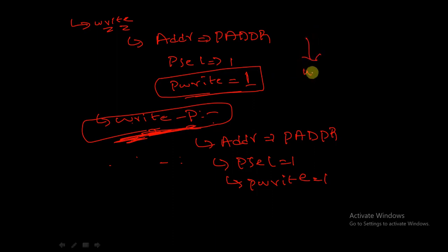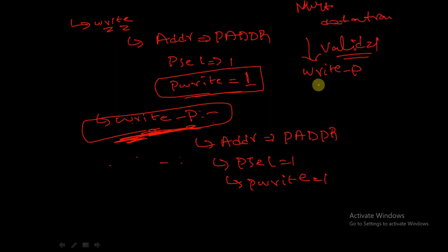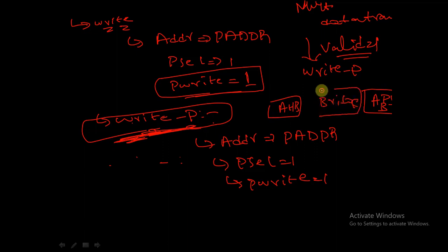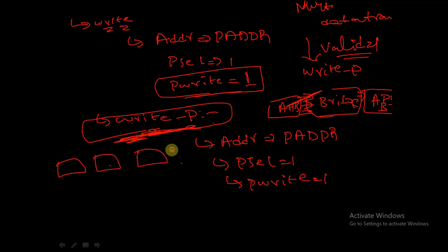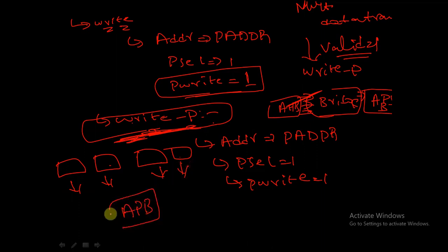We are entering into write underscore P when valid is equal to 1. Suppose the AHB is sending multiple packets to our bridge, and the bridge is sending it to APB. A wait state should be inserted between the multiple data transfers to prevent data loss. If AHB is sending multiple packets of data to our bridge, then APB requires some time to complete or process all the data items which have been sent to it.